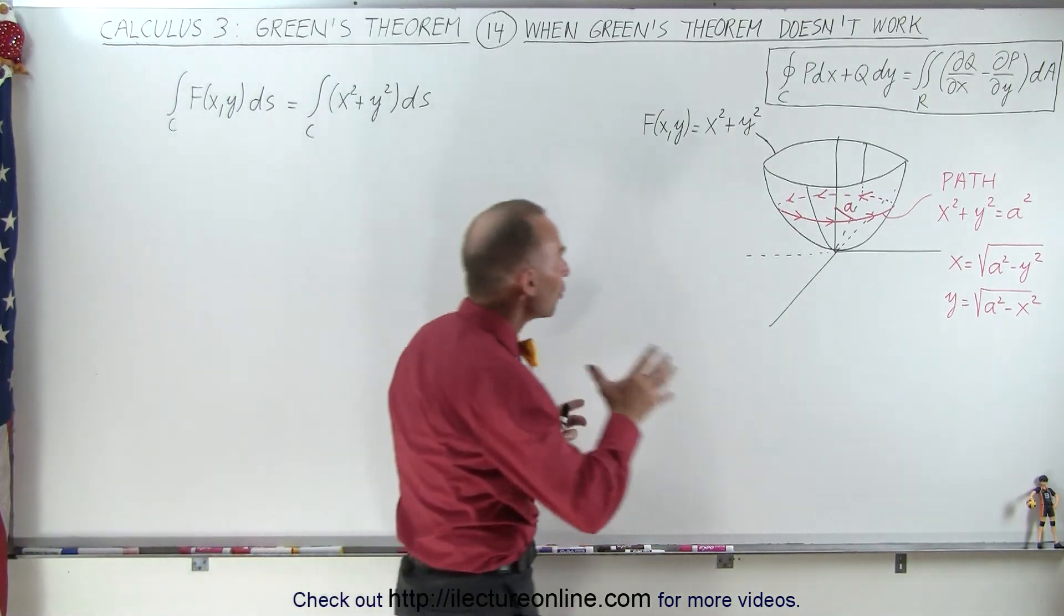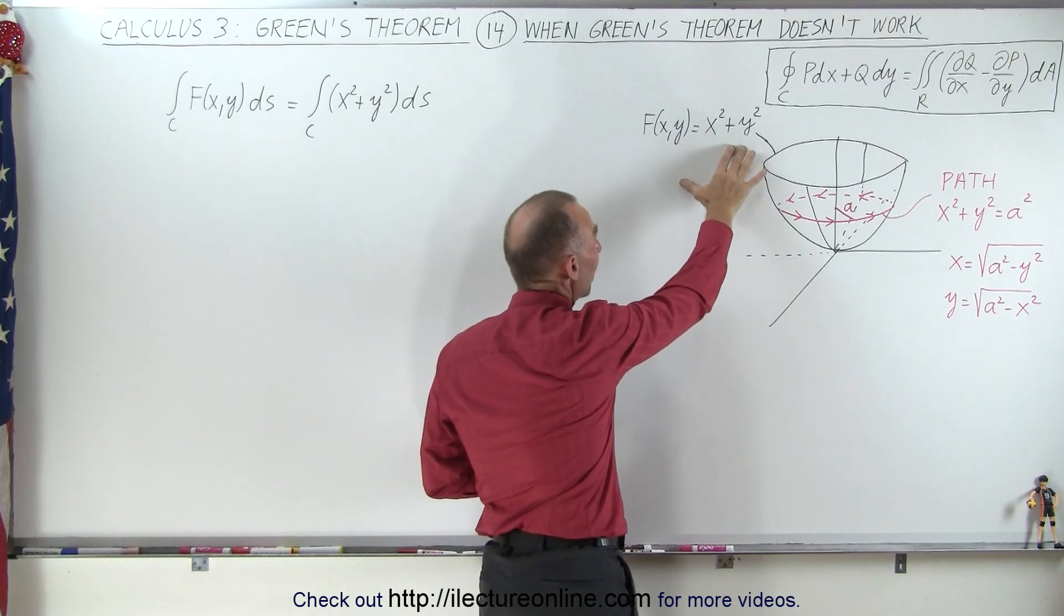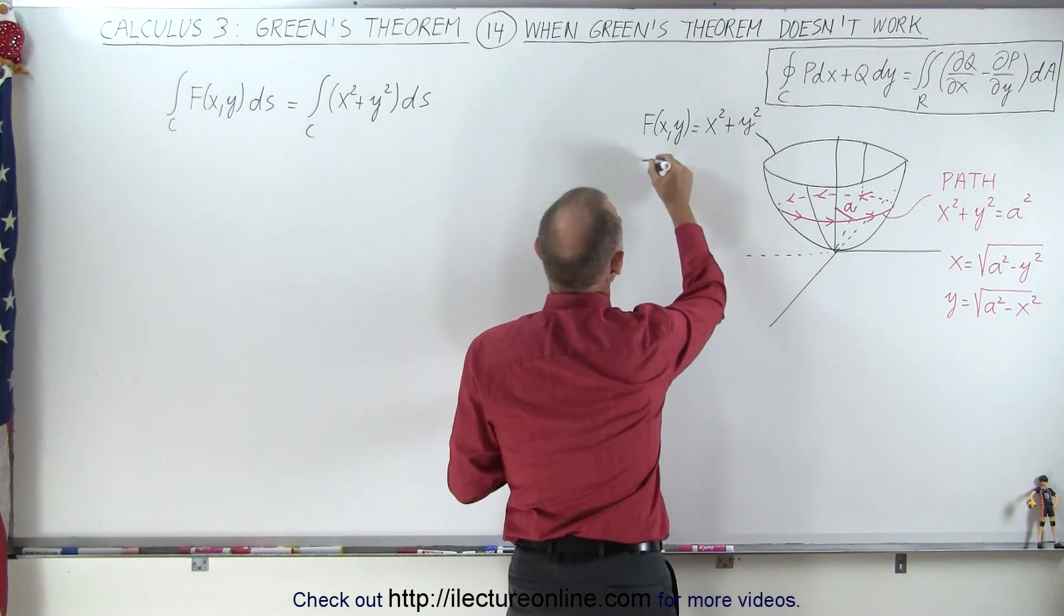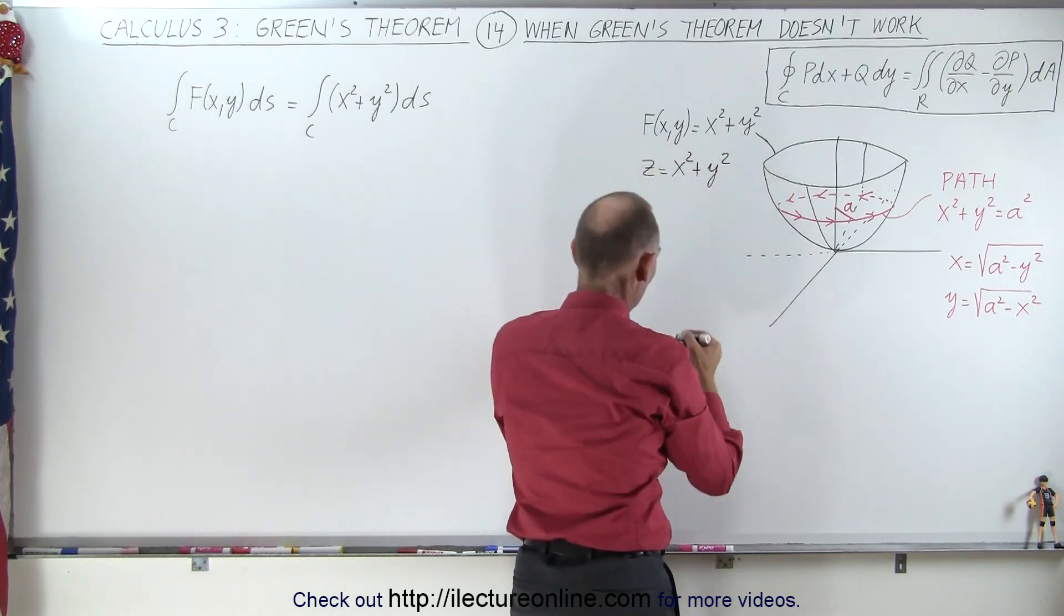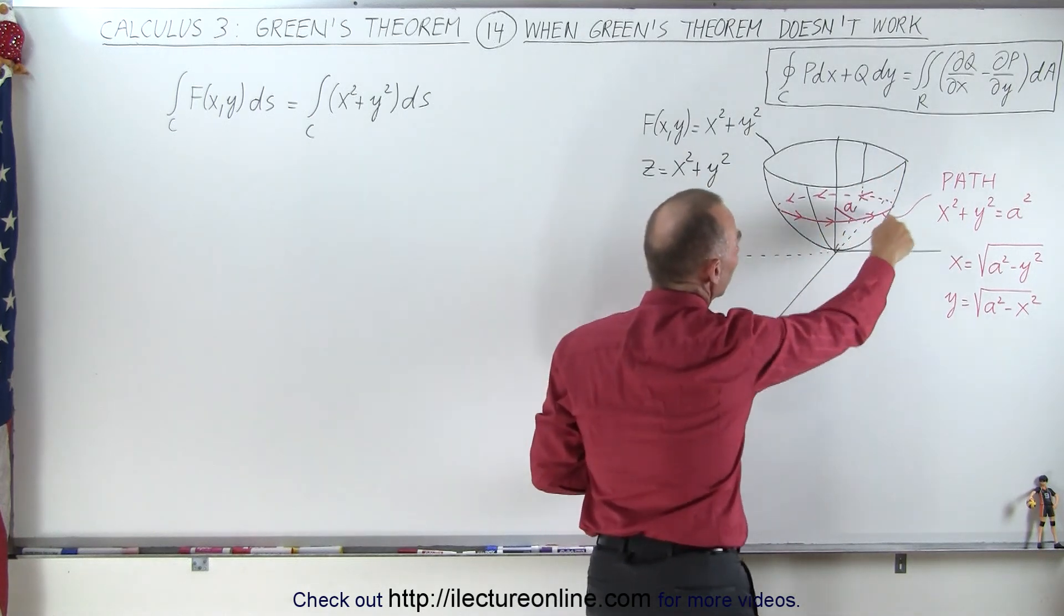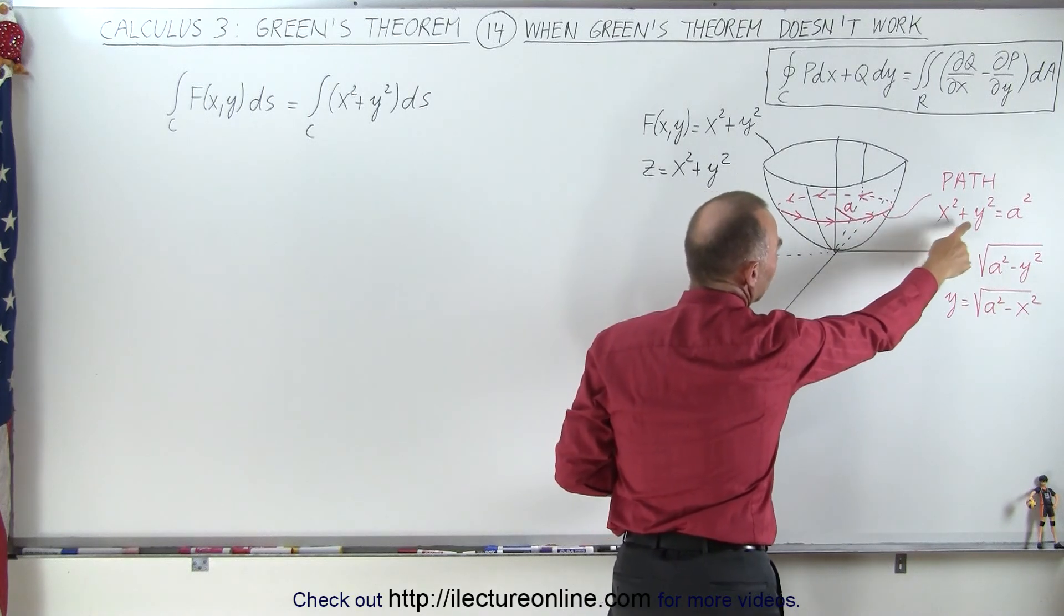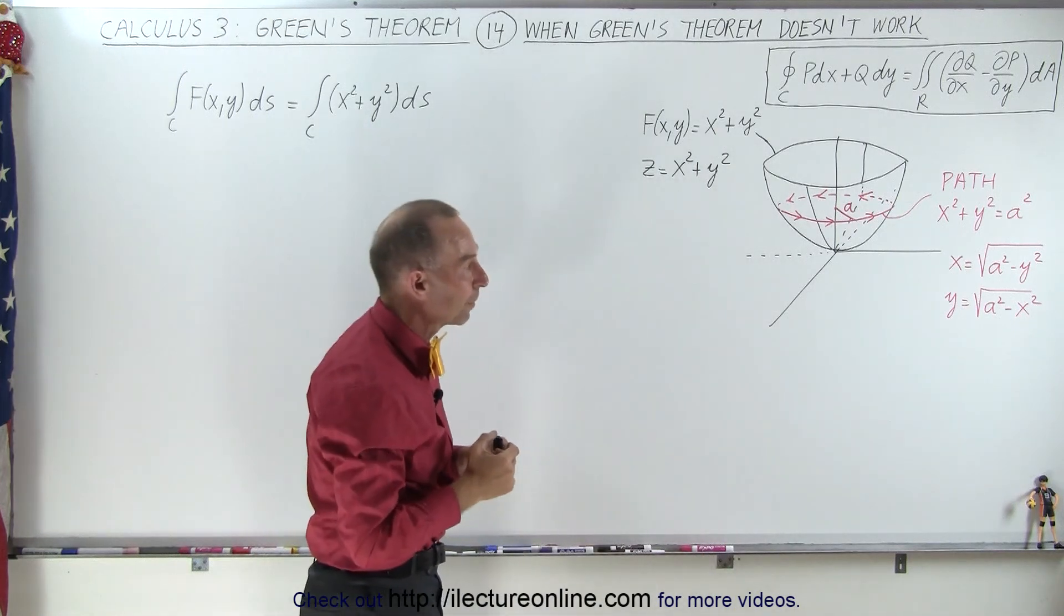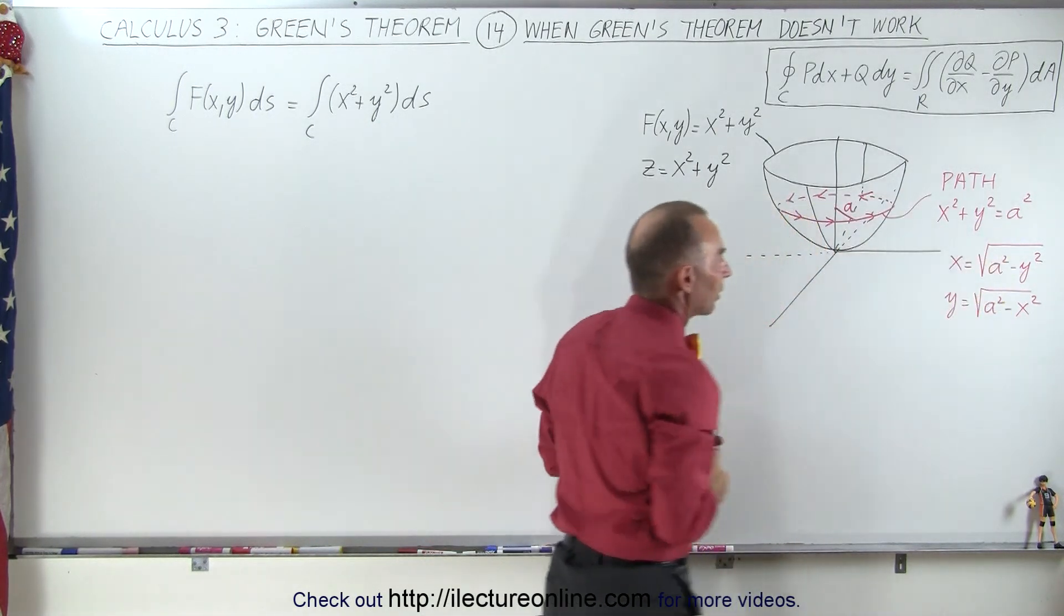Here we have a function, not a vector field, defined as x squared plus y squared. We can replace that function by z, so z equals x squared plus y squared. We end up with this paraboloid and we're going to integrate along the edge of that paraboloid along the circle defined by x squared plus y squared equals a squared, a being the radius of that circular path.